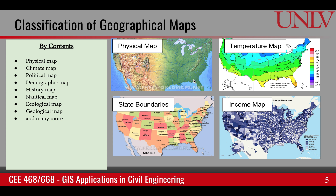Another type is a climate map, which tells us about climate on the surface — for example, a temperature map, rainfall map, or humidity map. There are also political maps, which show boundaries such as country, state, and county boundaries. Another type is a demographic map, which tells us about people on the ground — for example, an income map of various counties of the United States. There are many other maps, and you should try to familiarize yourself with these types.